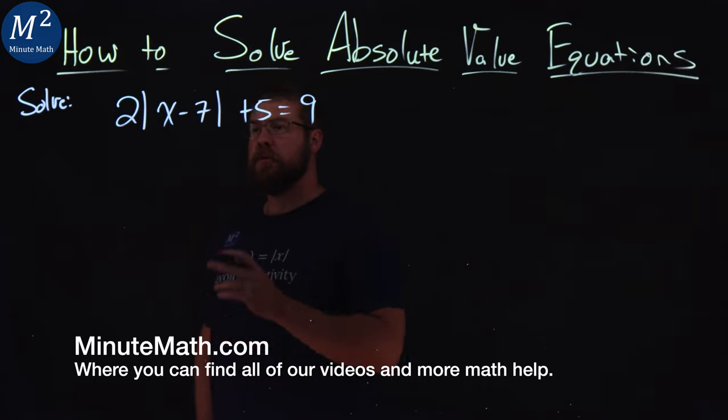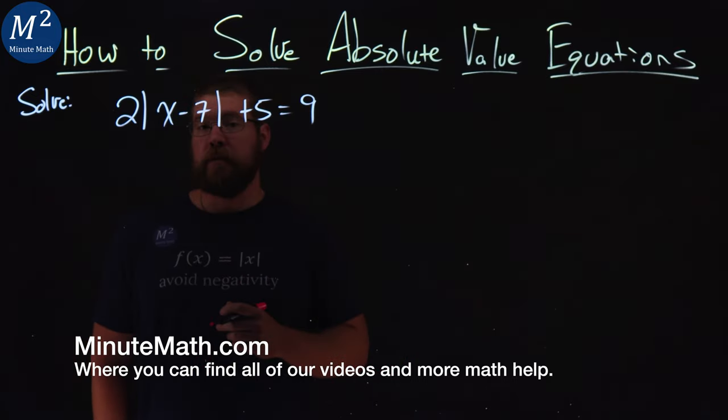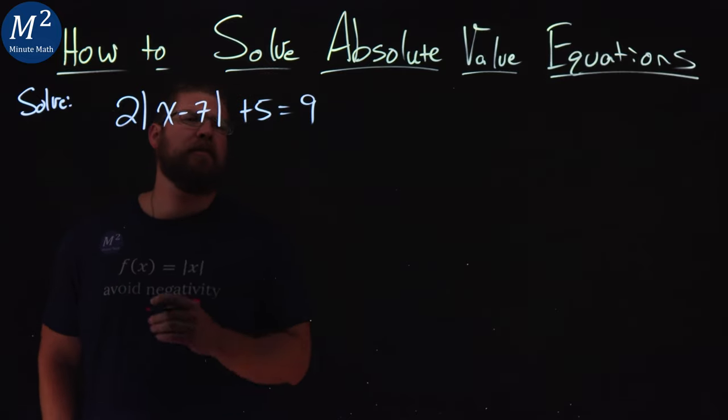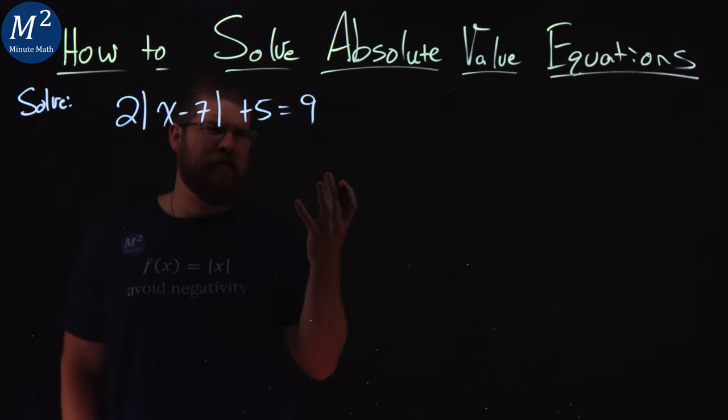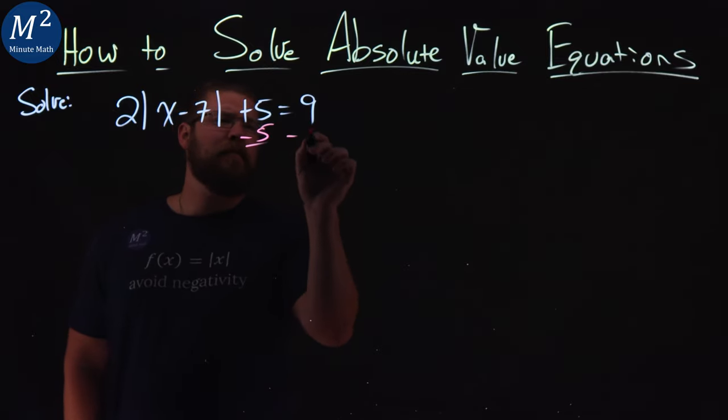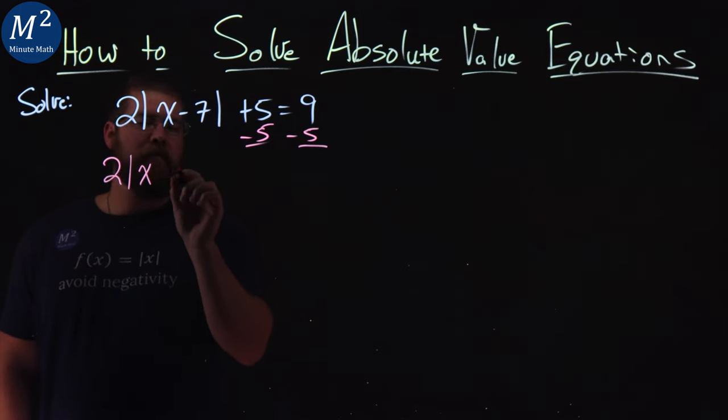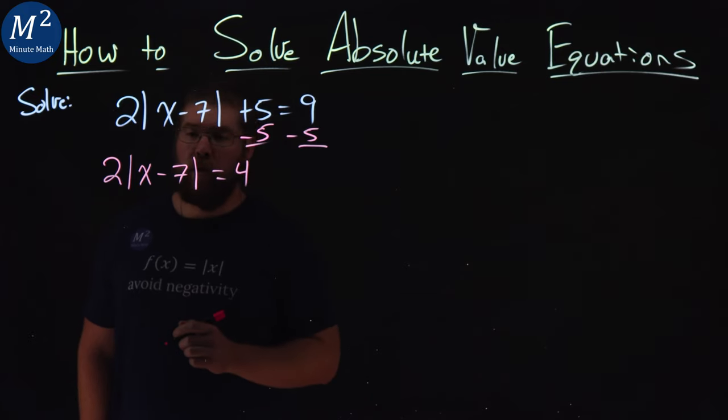We're given this problem here. 2 times the absolute value of x minus 7 plus 5 is equal to 9, and we want to solve this equation. One of my first steps here is I want to get x by itself. That's always our goal with solving. So I'm going to subtract 5 from both sides. I have 2 times the absolute value of x minus 7 is equal to 9 minus 5, which is 4.